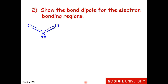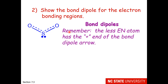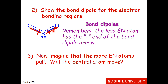Our next step, after drawing the Lewis structure with the proper shape, is to show the bond dipole for the electron bonding regions. Oxygen is more electronegative than sulfur, so the less electronegative atom has the positive end of the bond dipole arrow. Along each sulfur-oxygen bond, the bond dipole points toward the oxygen. Now imagine the more electronegative atoms pull — the pull to the left and to the right seem to balance each other out, but both vectors are pulling upward. That upward component is exactly the molecular dipole.